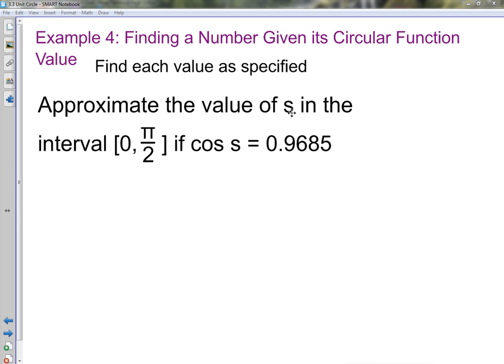So we're going to find the approximate value of s if the cosine of s is this value, but on this interval from 0 to π/2.